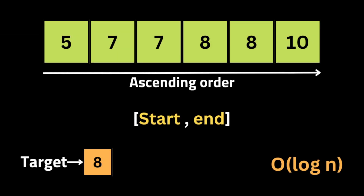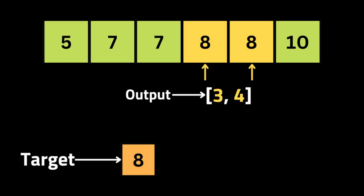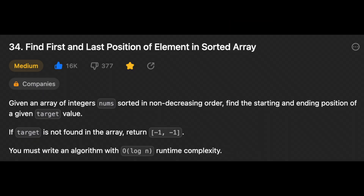The problem gives us an array of integers sorted in non-decreasing order and asks us to find the starting and ending position of a given target value. You must write an algorithm with O(log n) runtime complexity. For example, if we have a sorted input array and a target integer of eight, the result will be index three and four — meaning the starting position is three and the ending position is four.